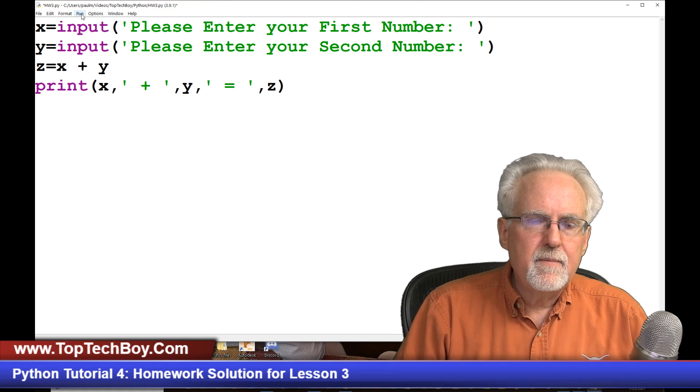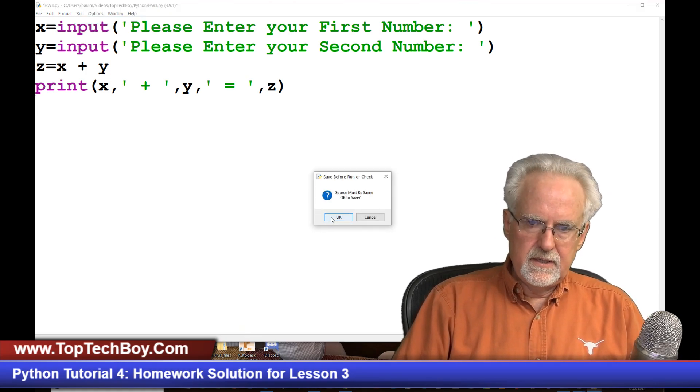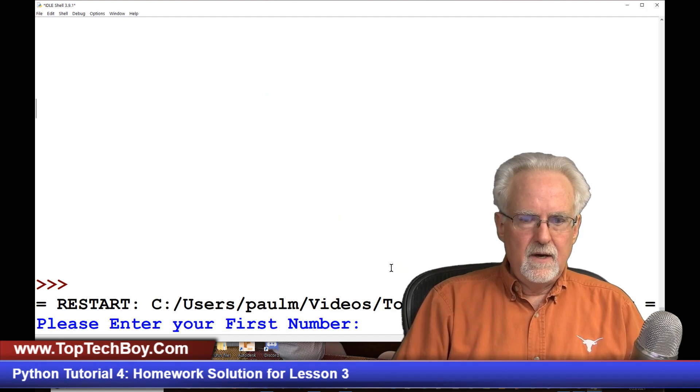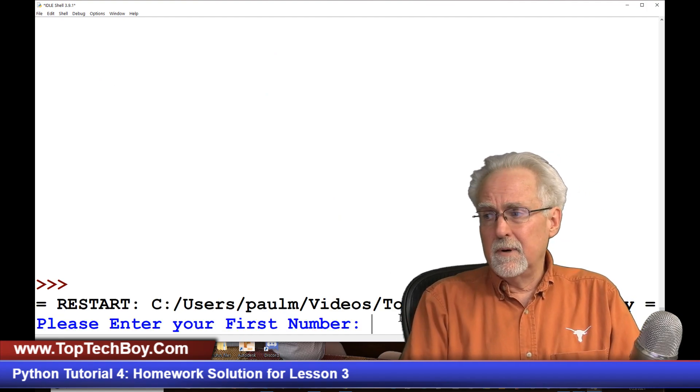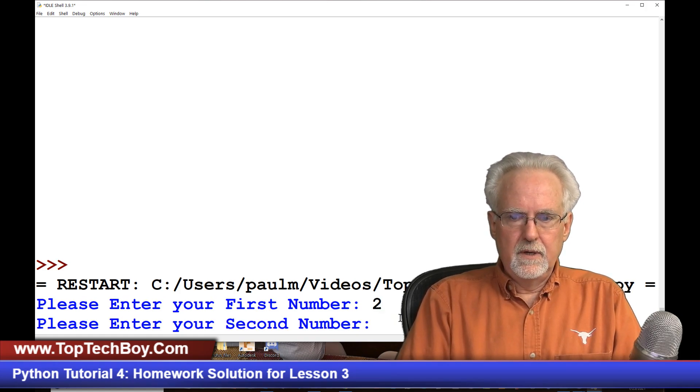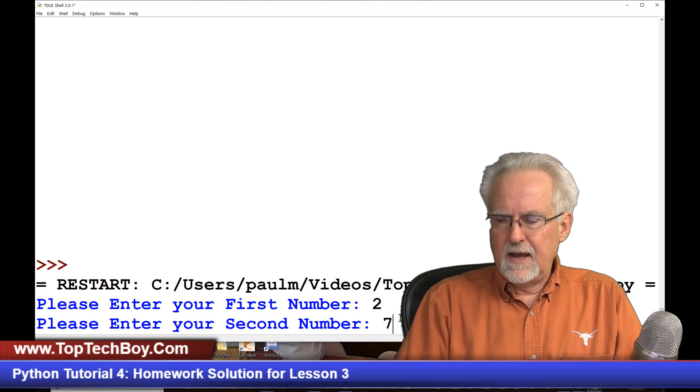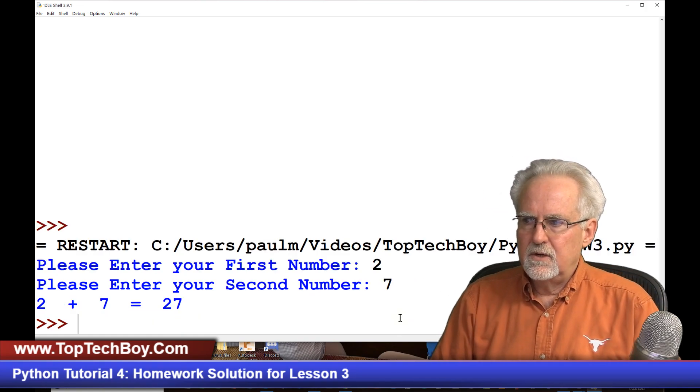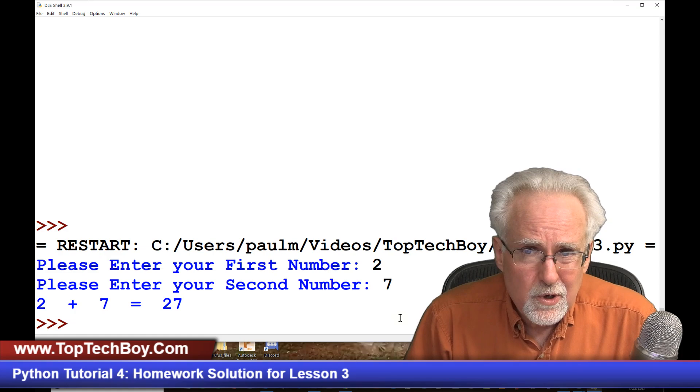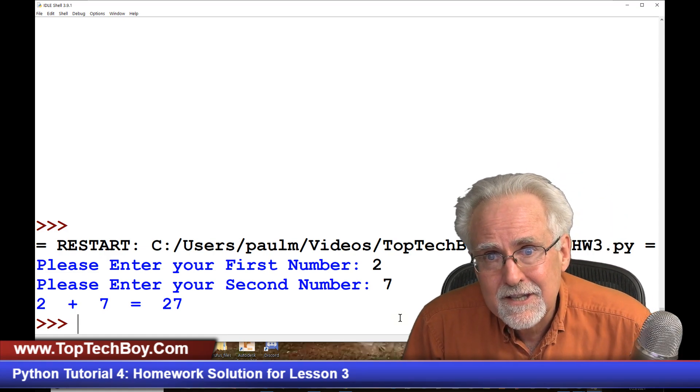And we are then going to come up here to run and then run module. Save it. Please enter your first number. I will put in the number two. Please enter your second number, the number seven. And then what do we get? Two plus seven equal 27. Denied. Did you guys get this error?